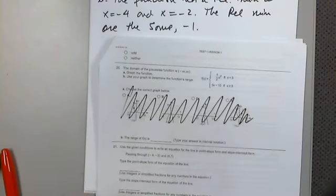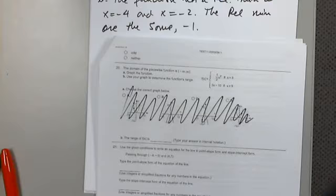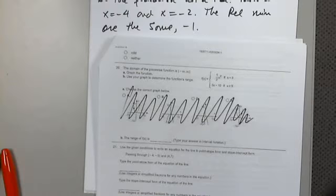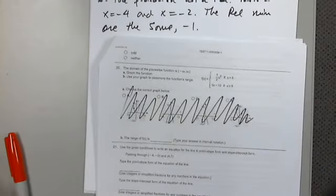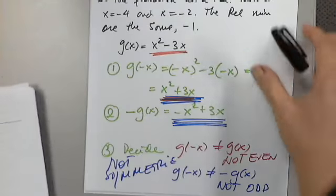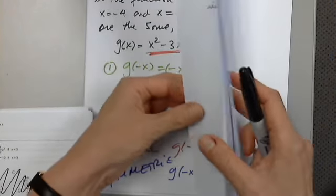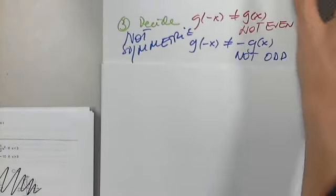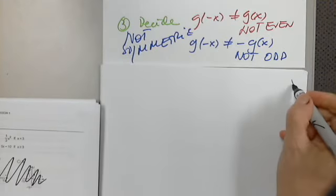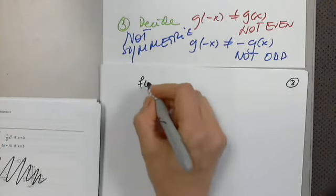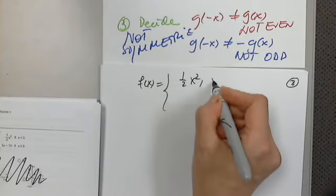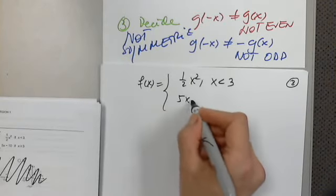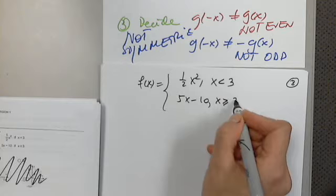A graph from these will not give any points, so checking a graph from these will not bring any points — don't bother with that. Let's start the problem from scratch. This is f(x) equals one-half x squared for x less than 3, and 5x minus 10 for x greater than 3.